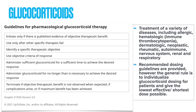Next: identify a specific therapeutic objective. What is the steroid going to fix? What results are you looking for? Next: administer sufficient glucocorticoid for a sufficient time to achieve the desired response. Next: administer glucocorticoid for no longer than is necessary to achieve this desired response. And finally: terminate if the objective therapeutic benefit is not observed, if complications arise, or if a maximum benefit has been achieved.